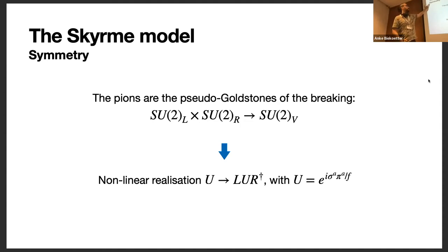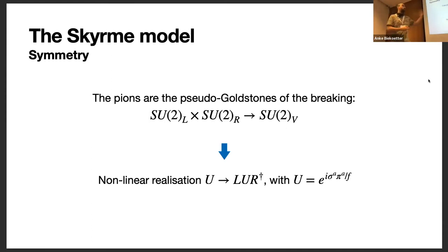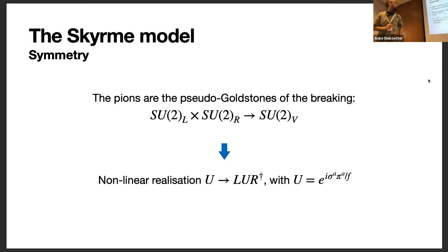Let me start with the Skyrme model, which is the case where skyrmions arise originally. They are the topological solitons of this theory, which is basically chiral perturbation theory for pions. There is some chiral symmetry in QCD which is spontaneously broken, so at low energies you can construct an EFT for the Goldstone bosons of this broken symmetry, which are the pions. You collect them into this unitary matrix U and write the chiral Lagrangian as a function of U.